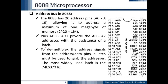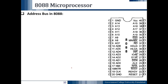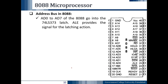To demultiplex the address signals from the address/data pins, a latch must be used to grab the address. The most widely used latch is the 74LS373 IC. AD0 to AD7 of the 8088 microprocessor IC go into the 74LS373 latch, and pin number 25 — the ALE (Address Latch Enable) pin — provides the signal for the latching action, controlling the latch.